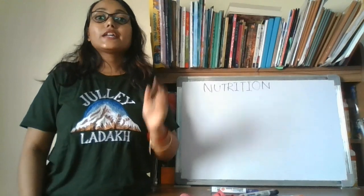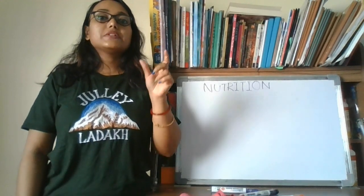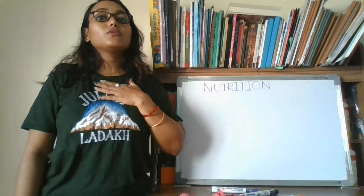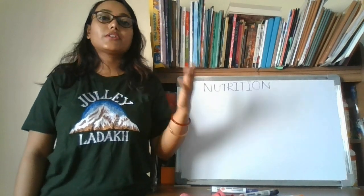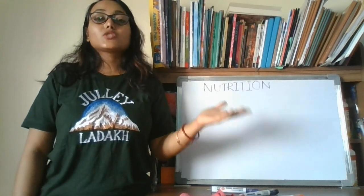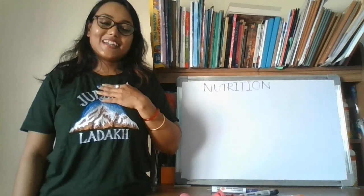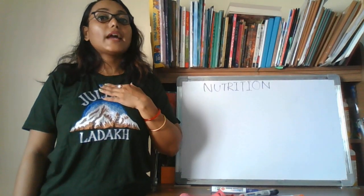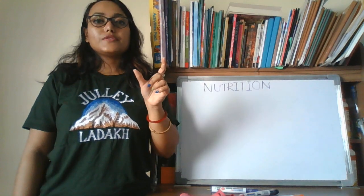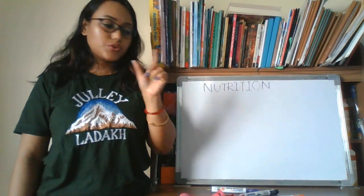The second category is heterotrophic nutrition. Hetero means other. When we humans and all other animals, other living beings, we depend on plants for our food intake, that's why we are called heterotrophs. And that kind of nutrition is called heterotrophic nutrition.